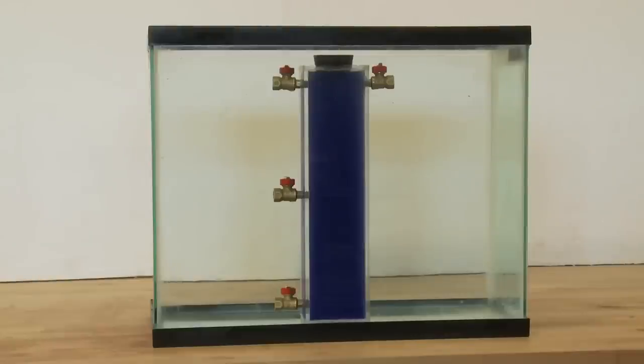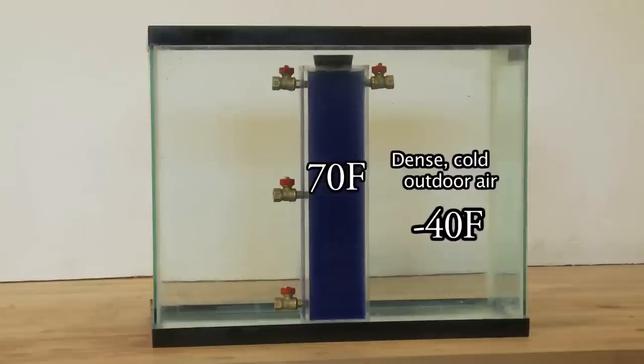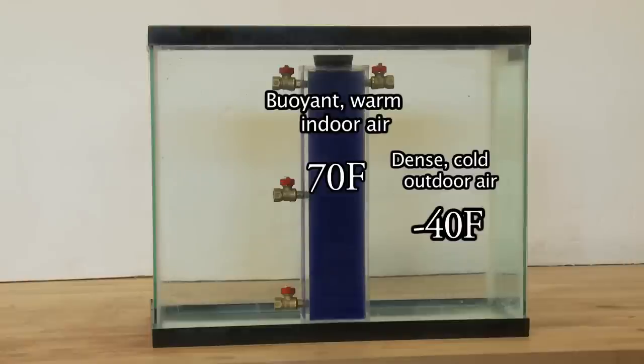When it gets very cold outside, let's say it's 40 below outside and inside it's 70 above, that's a 110 degree difference in temperature. What that difference in temperature does is it creates very cold, dense, heavy air outside in relation to lighter, more buoyant air inside. That's your pressure difference.